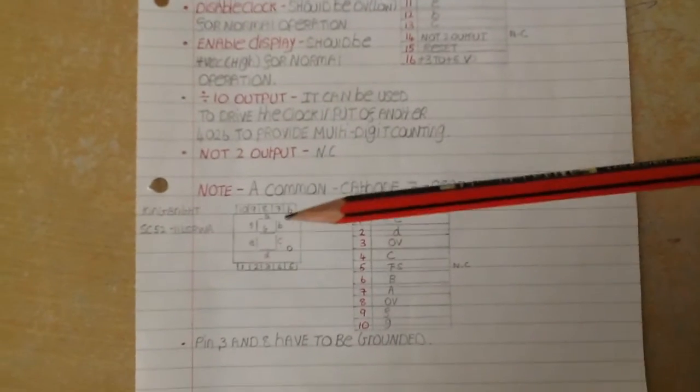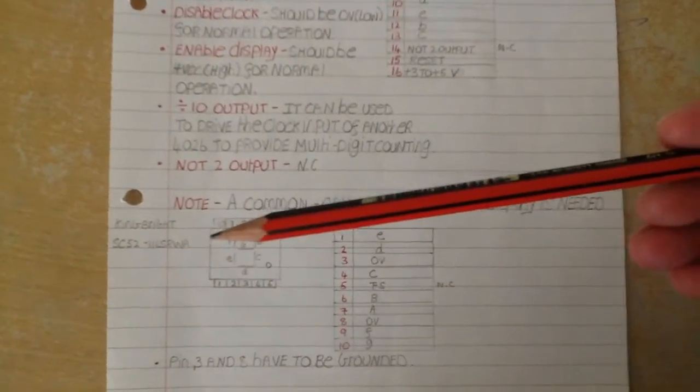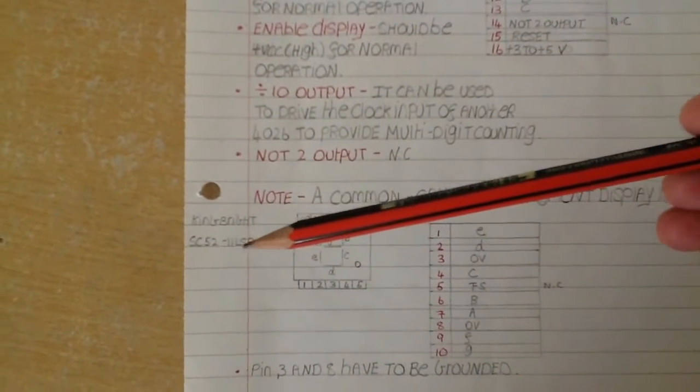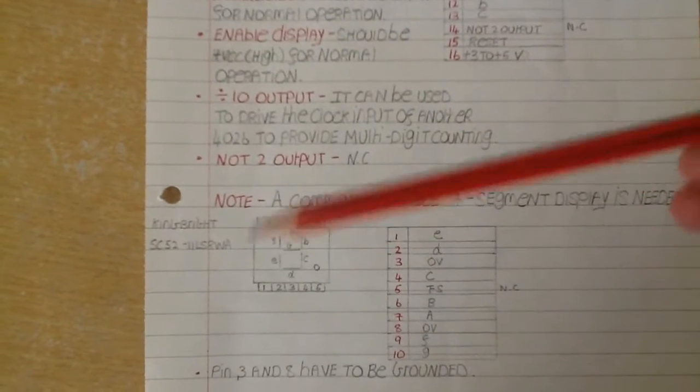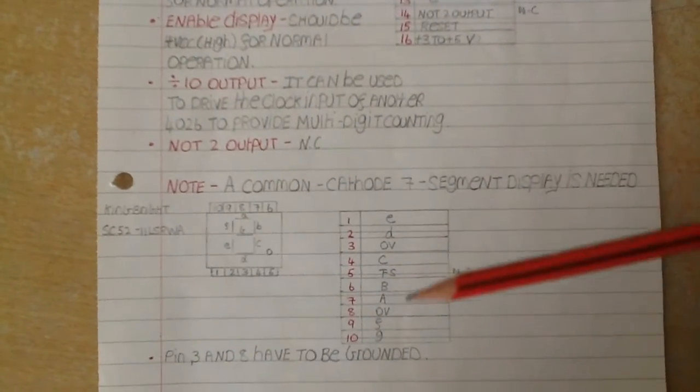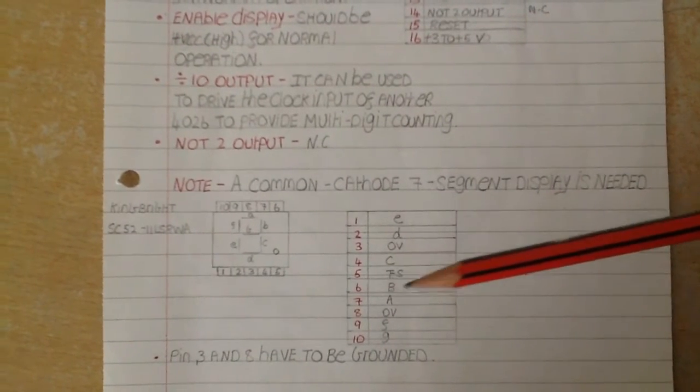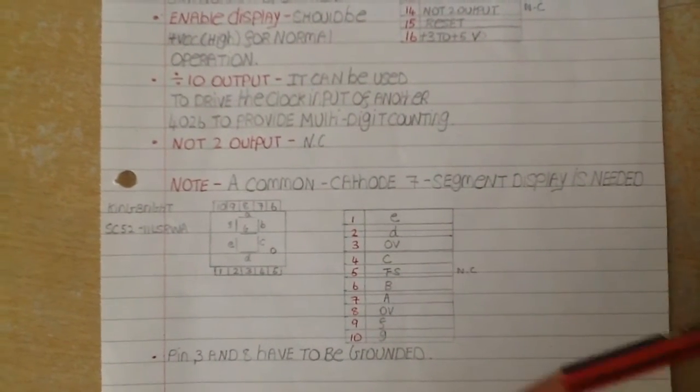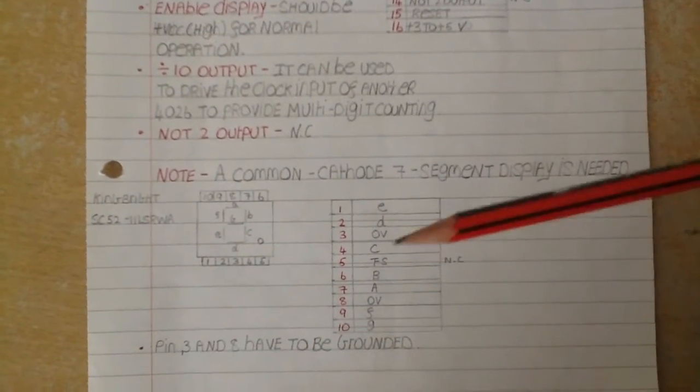We are using a common cathode 7-segment display. The exact one is the Kingbright SC52-11 LSR WA. It has 10 pins and this is what each pin does. In my circuit I am not using pin 5, it is for the full stop, I just don't use it. And you have to note as well that pin 3 and pin 8 are grounded.